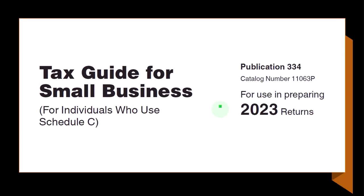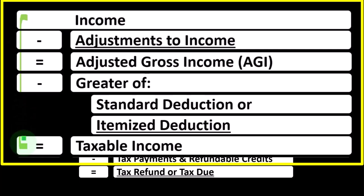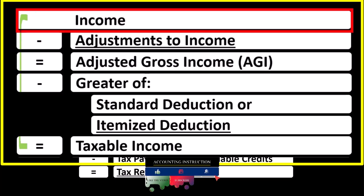Looking at the individual income tax formula, the first half is basically a funny income statement. Most income statements have income minus expenses resulting in net income. Here we have income minus various deductions resulting in taxable income. The Schedule C rolls into line one of our income tax formula — the Schedule C itself is an income statement with business income minus business expenses resulting in net business income.